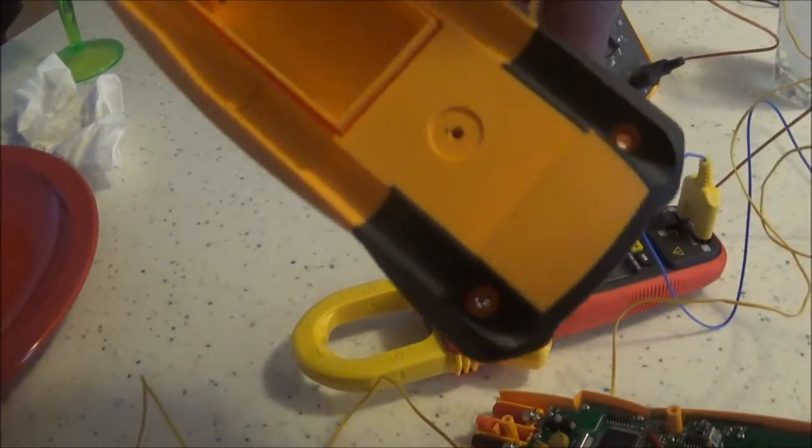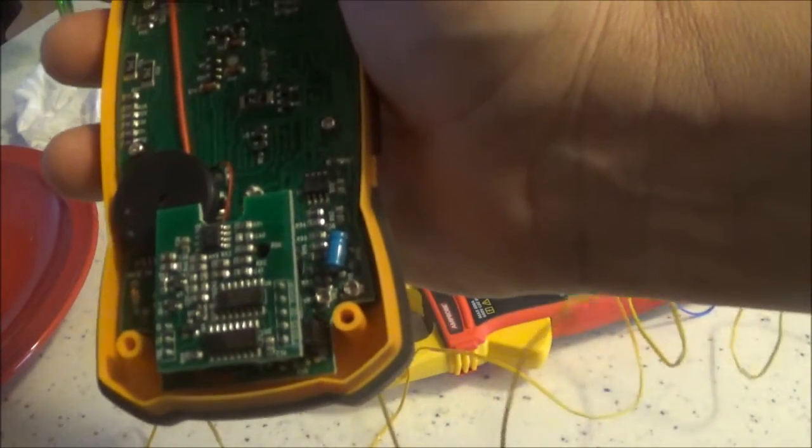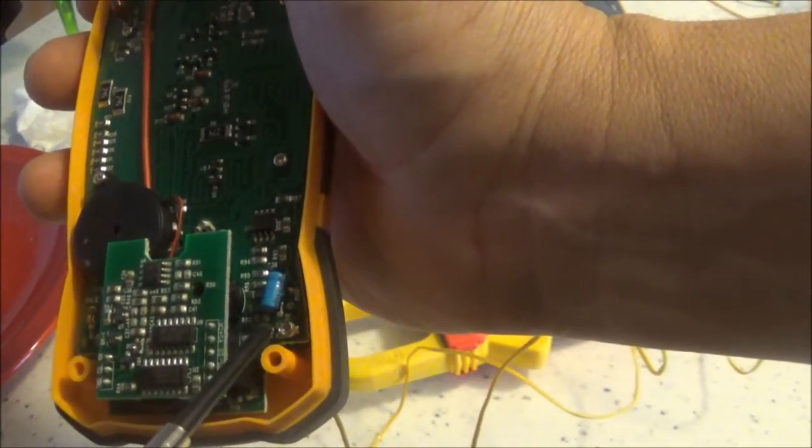You've got five screws. And it tells you to adjust VR3 to get it close to 32, and then VR2 to fine tune it.